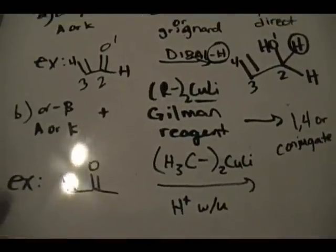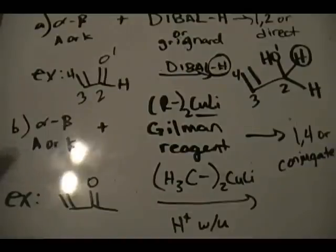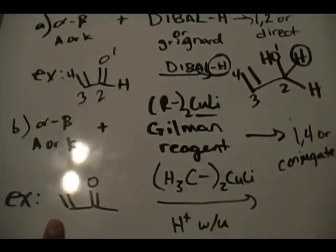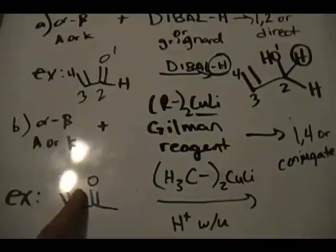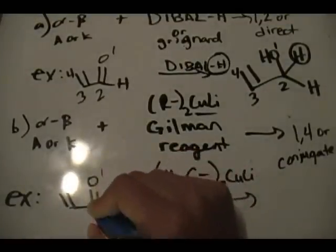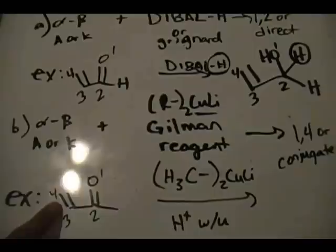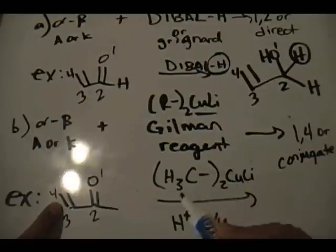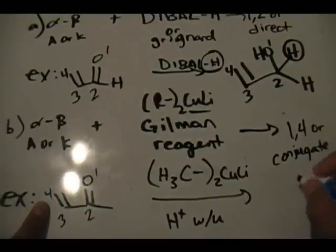In the example below, we have an alpha-beta unsaturated ketone. It's a conjugated system: C=C double bond, C-C single bond, then C=O double bond. It has to be conjugated in exactly this fashion — if it's not, the reaction won't work as described. Number your system: 1, 2, 3, 4 starting with oxygen. Get rid of the C=C double bond and attach whatever group you have to position number 4 — that's the 1,4 conjugate product.